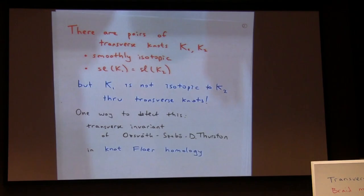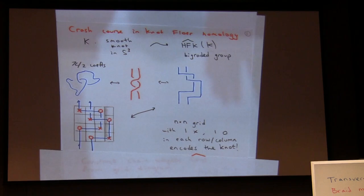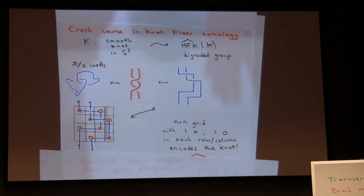I want to talk about this invariant, so I'll do a little bit of crash course in knot Floer homology. We'll define the knot Floer homology group — it's going to be a bigraded group, but I'm doing a stripped-down version: Z/2 coefficients. We start with a smooth knot in S3. You want to represent it as a braid, and draw the braid from bottom to top.